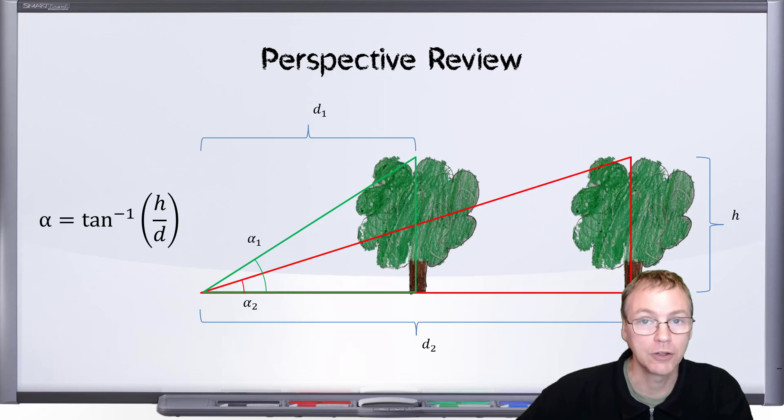So those were the angles that the Rayleigh criterion was referring to. If an angle, say alpha 2 here, is smaller than the Rayleigh criterion, then that tree at that distance will not be resolvable anymore. It will just look like a green blur.